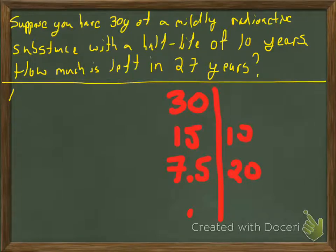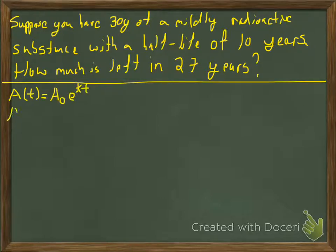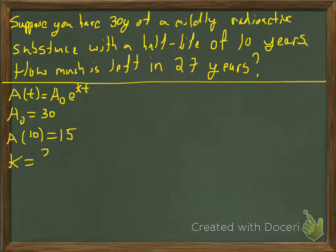Sometimes you might have to solve for the half-life, which is similar to solving how long it takes for something to double. Let's write down what we know: A(t) = A₀e^(kt), the initial amount is 30 grams, and in 10 years we'll have 15 grams. We want to know how much is left after 27 years, but we don't know k — so we need to find it first, just like in the bunny rabbits problem.